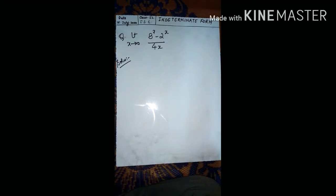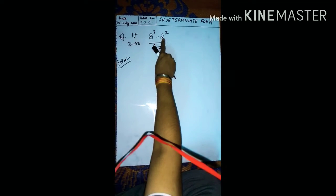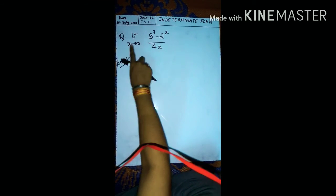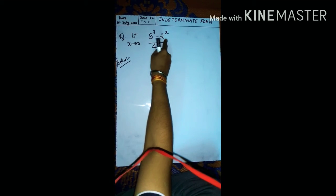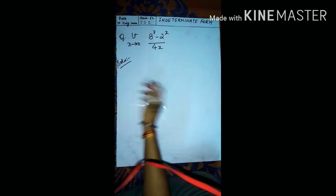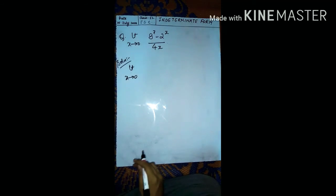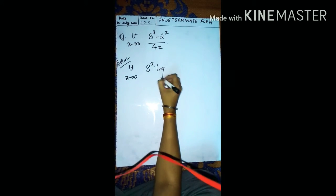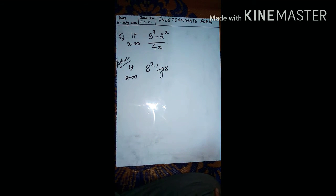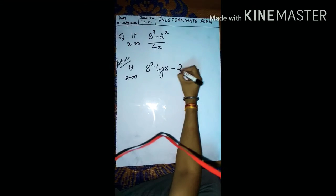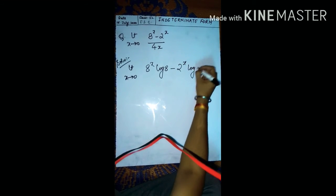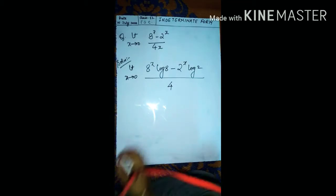Question 3: limit x tends to 0 of (8 to the power x minus 2 to the power x) upon 4x. Putting x equal to 0 gives 0 minus 0 upon 0, so 0 by 0 form — use L'Hôpital's rule. Differentiating: 8 to the power x log 8 minus 2 to the power x log 2 upon 4, using the formula that the differentiation of a to the power x is a to the power x log a.